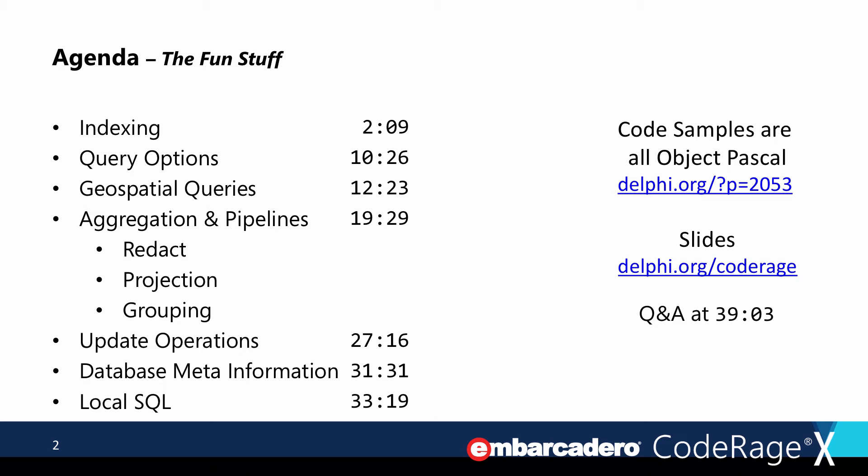We're going to talk about indexing, query options, geospatial queries — which is a cool thing you can do with MongoDB where you're able to do queries based on two-dimensional geometry. We'll also look at aggregation and pipelines, explain what those are and how to use them, update operations, getting some meta information from the database, and how to take advantage of local SQL with MongoDB.